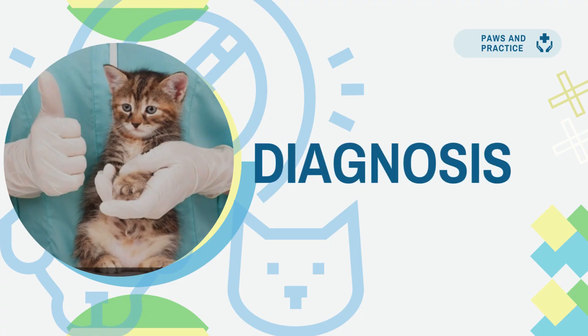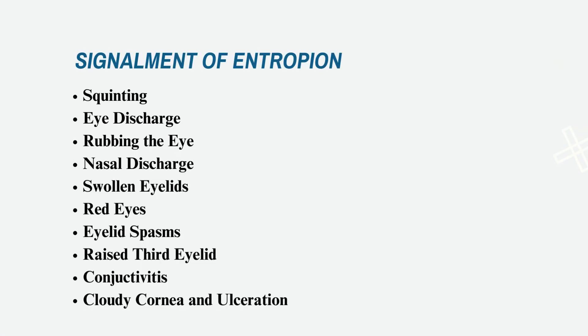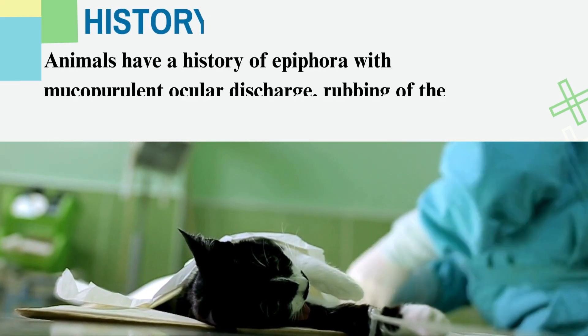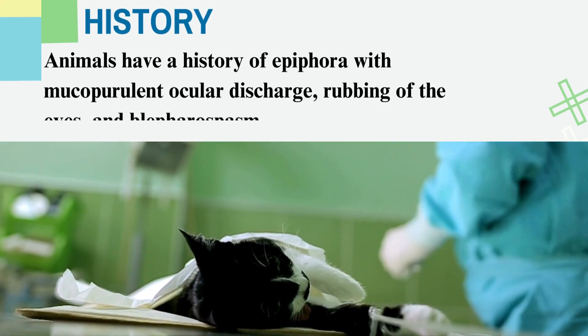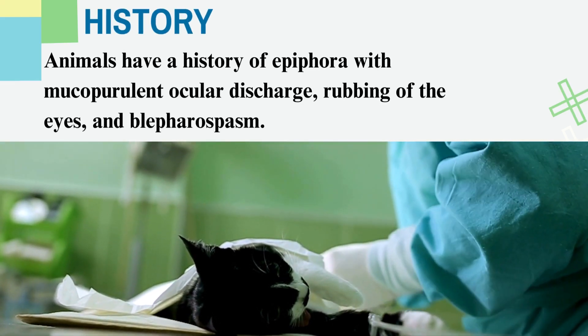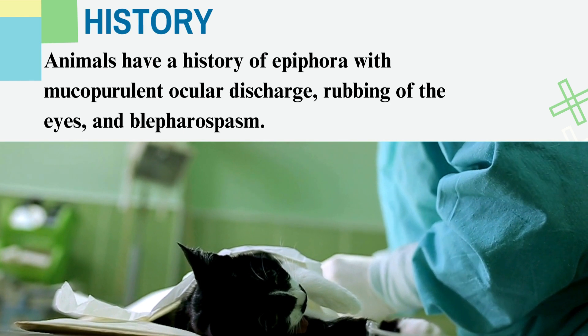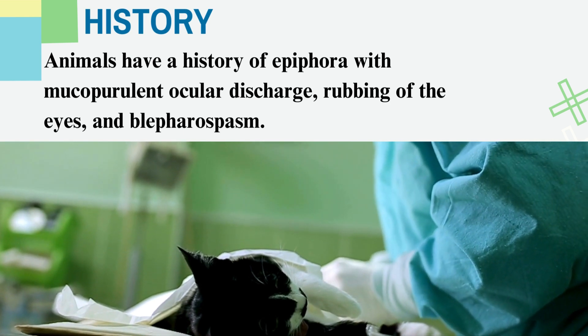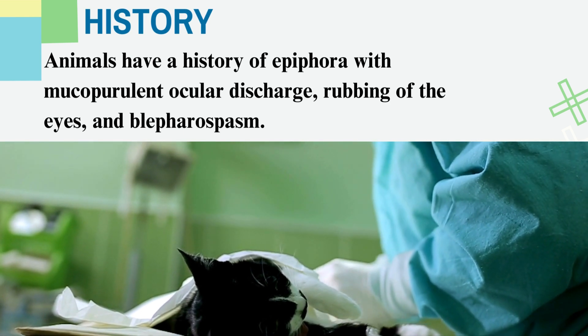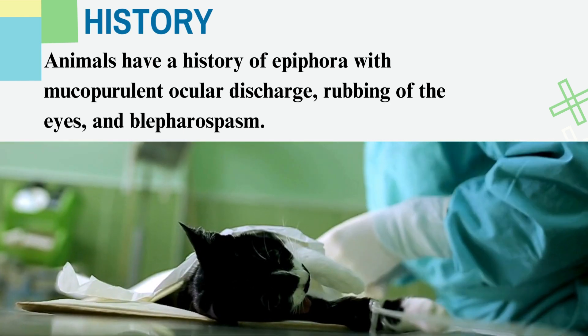Diagnosis is based on signalment, signs and symptoms, and history. Animals have a history of epiphora with mucopurulent ocular discharge, rubbing of the eyes, and blepharospasm.